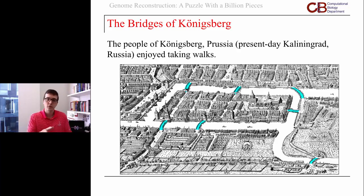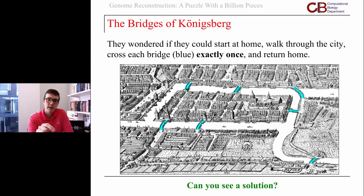They enjoy taking walks throughout the city, and they were curious: is it possible to start at home, walk through the city crossing every bridge exactly once, and then return home? They have to use every bridge, they can't use any bridge more than once, and they have to come back to where they started.